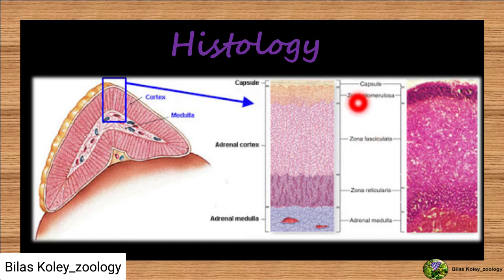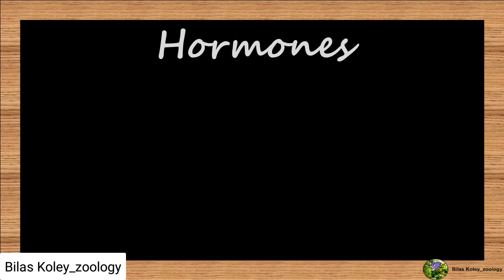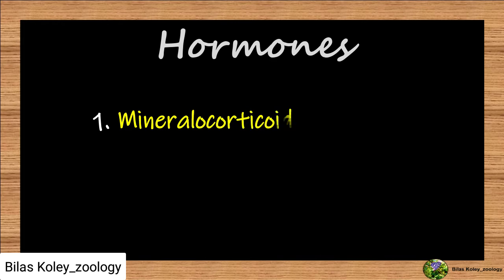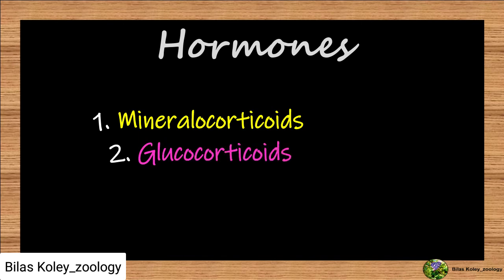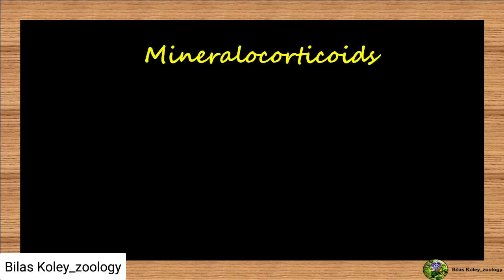The outer adrenal cortex and inner adrenal medulla differ strictly functionally and embryologically from each other. The outer adrenal cortex is mesodermal in origin and is formed of three zones of cells: zona glomerulosa, zona fasciculata, and zona reticularis. It secretes about 40 different steroid hormones collectively called adrenal corticoids, all synthesized through modifications of cholesterol. Corticoids are divided into three categories on the basis of their function: mineralocorticoids, glucocorticoids, and gonadocorticoids.